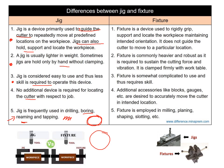A fixture, by contrast, rigidly grips, supports, and locates the workpiece in its intended orientation — it has nothing to do with guiding the cutter. Fixtures are commonly much heavier and more robust, are clamped firmly, and must withstand a lot of vibration from cutting tools. They require more skill to set up correctly and are commonly used with milling, routing, shaping slots, and planing — more complex operations overall.